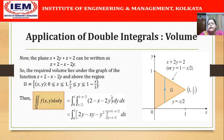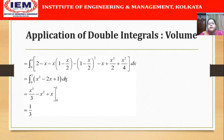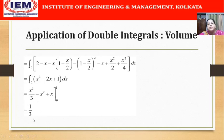Evaluating the inner integral gives 2y - xy - y² with limits from x/2 to 1 - x/2. Substituting the limits yields an expression which, after simplification, becomes x² - 2x + 1. Integrating with respect to x gives x³/3 - x² + x, and putting the limits from 0 to 1 gives the final answer 1/3, which is the volume of the given tetrahedron.